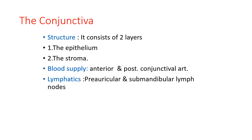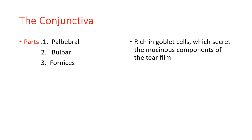The structure of conjunctiva consists of two layers: the epithelium and the stroma. Blood supply is from the anterior and posterior conjunctival arteries; lymphatics drain to pre-auricular and sub-mandibular lymph nodes. The parts are palpebral conjunctiva, bulbar conjunctiva, and fornical conjunctiva. The conjunctiva is rich in goblet cells which secrete the mucous component of the tear film.